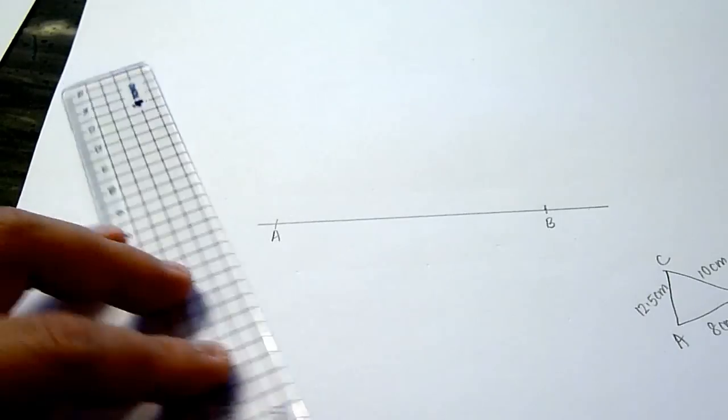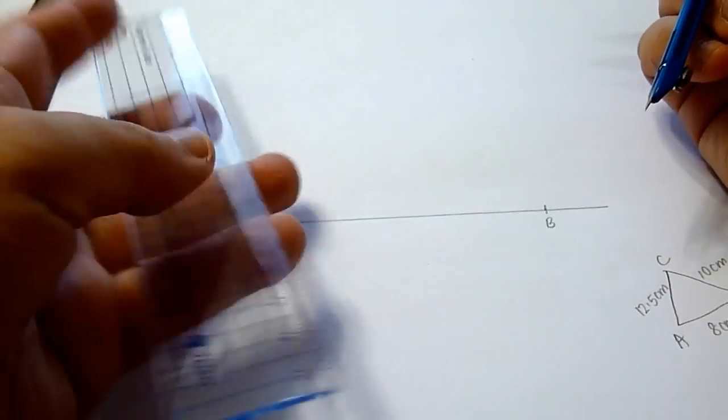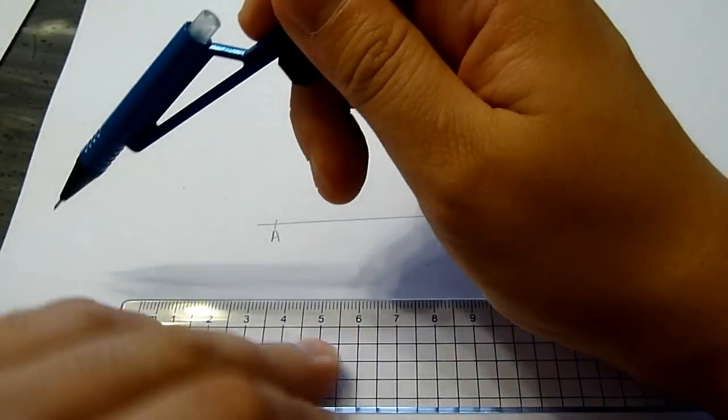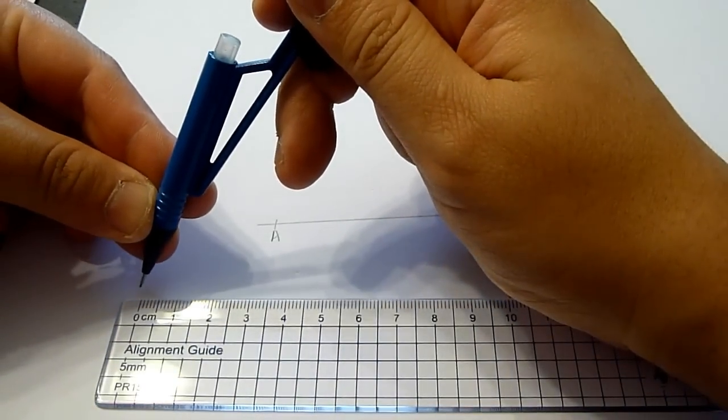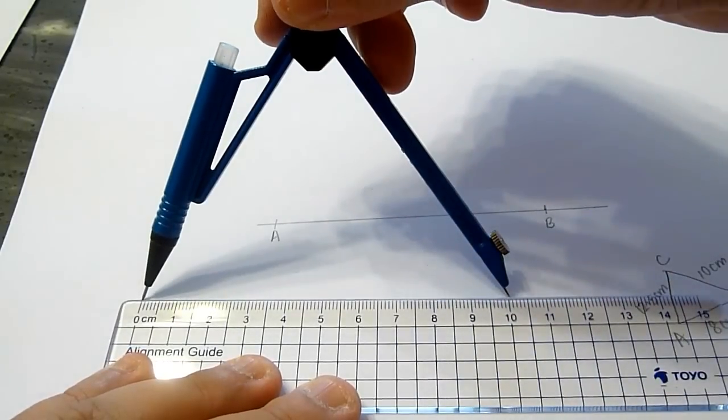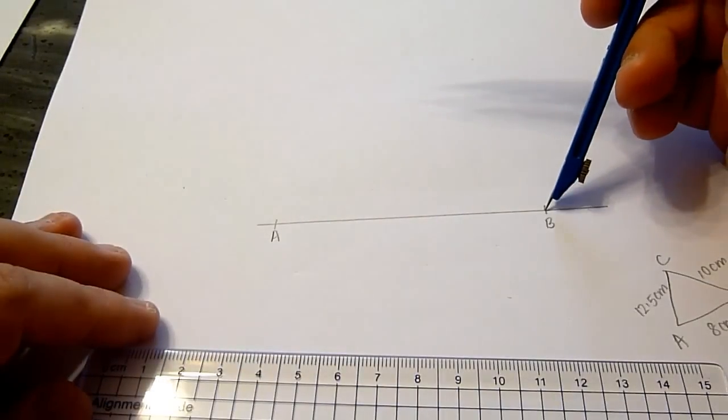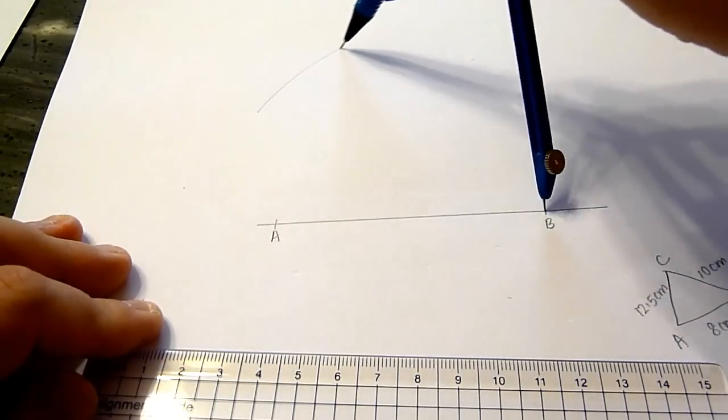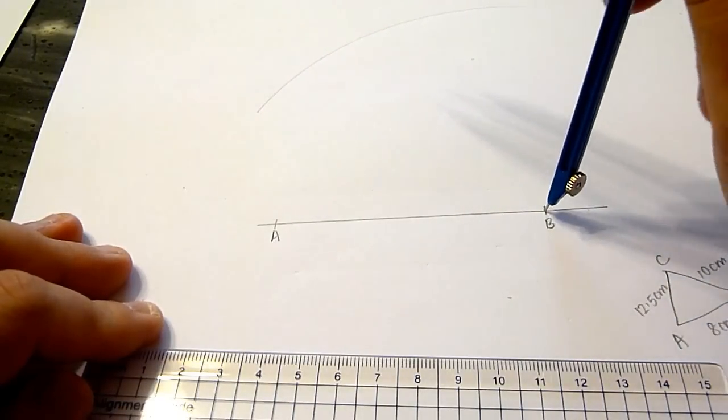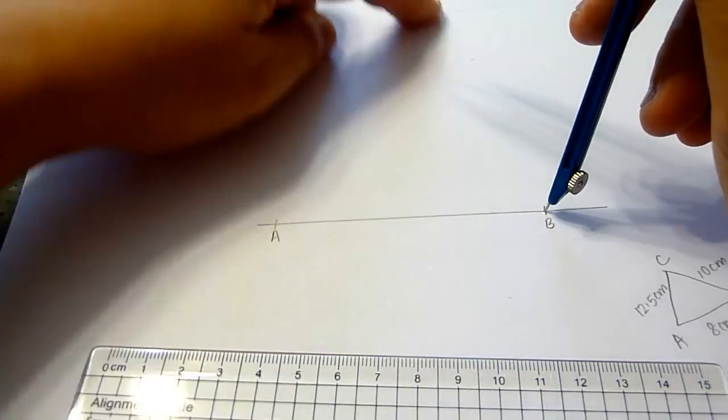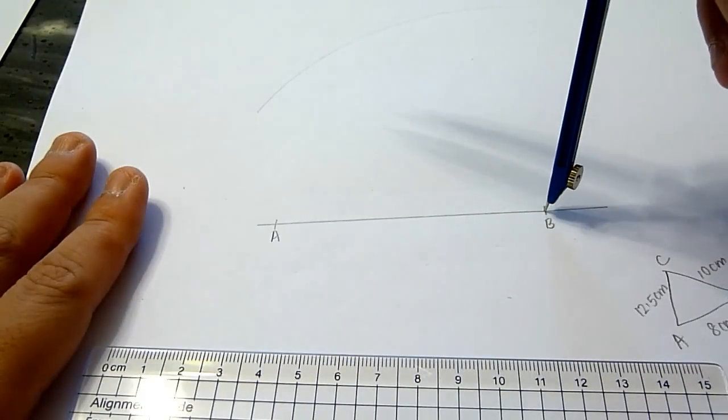Next, to draw BC, we have to measure the arm such that it measures 10 cm. And at point B, we draw an arc, knowing that the distance from point B to any point at the arc would be 10 cm.